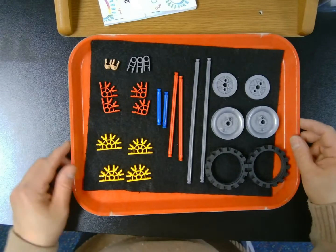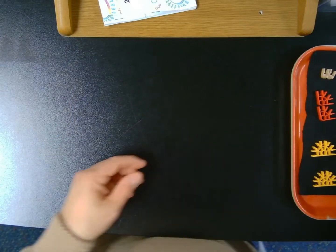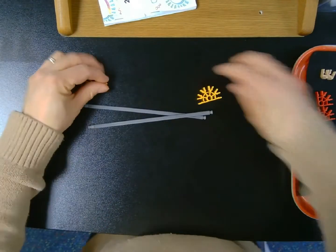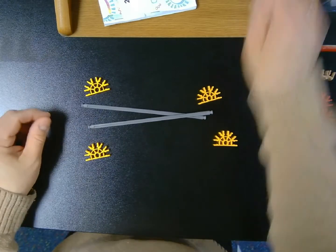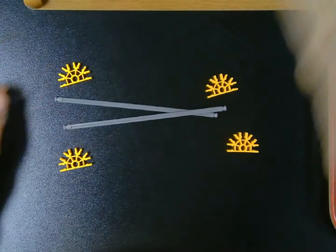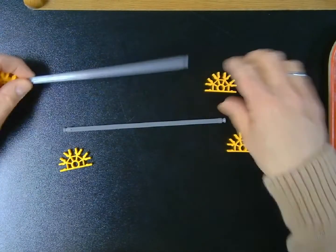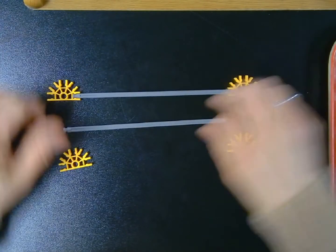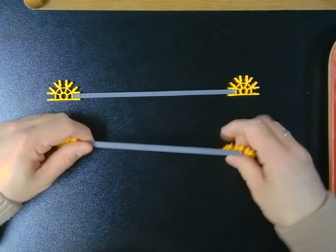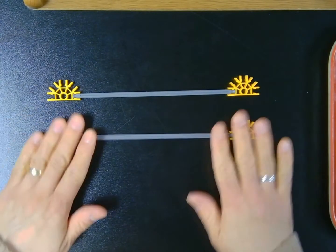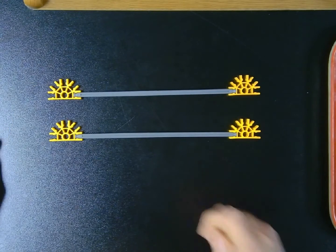Now I'm going to start with the gray rods and the yellow connectors. I'm going to add a yellow connector to each end of a gray rod like so. These are going to form the basis of our vehicle—let's call it the chassis.